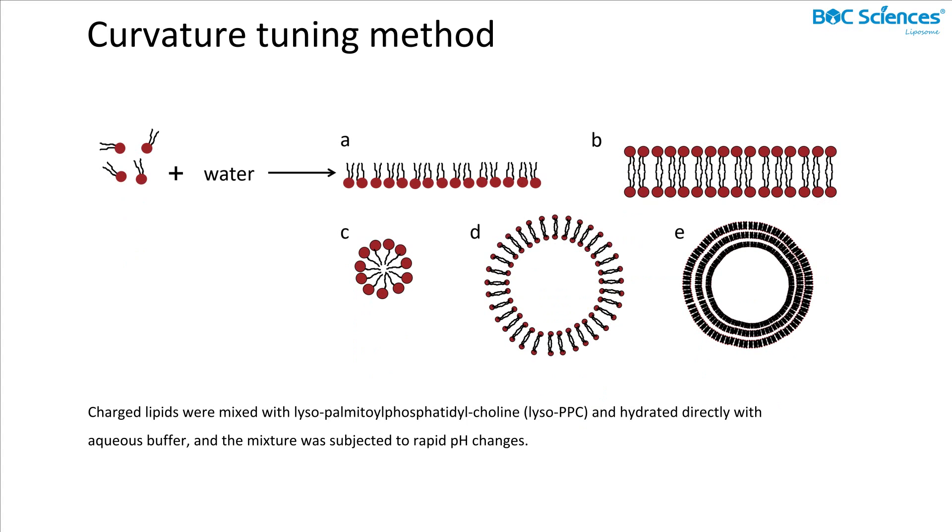The second preparation method is the curvature tuning method. The curvature tuning method is based on the phenomenon of spontaneous vesiculation and the curvature theory of lipid bilayers which forces lipid bilayers to bend into liposomes. Using this strategy, lipids were mixed with lysopalmitoyl phosphatidylcholine and directly hydrated with an aqueous buffer, and the mixture was subjected to rapid pH change. Meanwhile, rapid pH change was achieved by adding sodium hydroxide with pH reaching up to 11, and pH was adjusted to 7.4 using hydrochloric acid for a fixed time period.